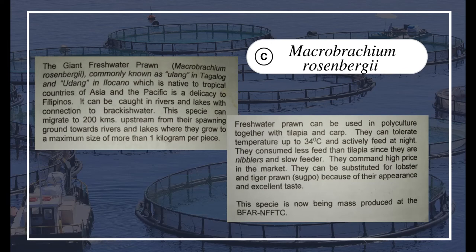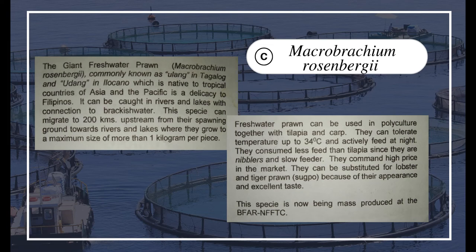Freshwater prawn can be used in polyculture together with tilapia and carp. They can tolerate temperatures up to 34°C and actively feed at night. They consume less feed than tilapia since they are nibblers and slow feeders. They command a high price in the market and can be substituted for lobster and tiger prawn (suahe) because of their appearance and excellent taste. This species is now being mass-produced at the BFAR FFTC.